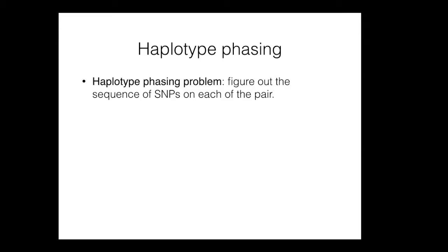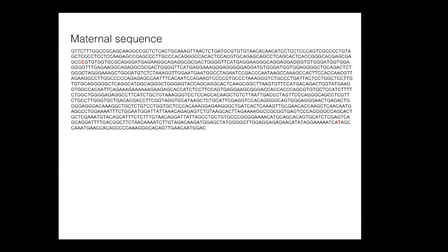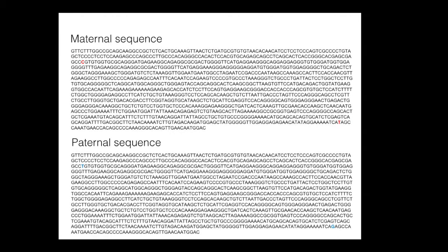What is the haplotype phasing problem? It is to figure out the sequence of SNPs on each of the pair. The information I need is not only the fact that you have a variation, but also how the variations are paired up. I want to know whether the C here and the T here are on the same side of the family, or C and G are on the same side. The reason is because these SNPs often act in cooperation — knowing you have a variation at a position is not enough.